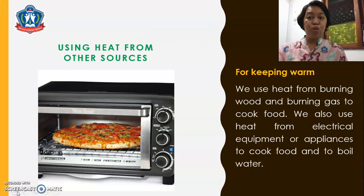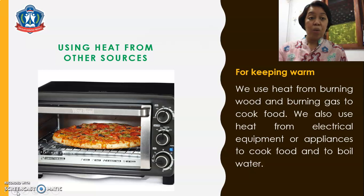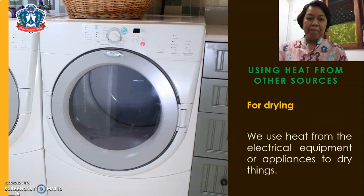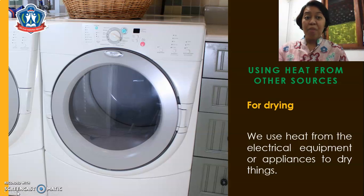So let's go now to using heat from other sources. For cooking, we use heat from burning wood and burning gas to cook food. We also use heat from electrical equipment or appliances to cook food and to boil water. For keeping warm, in very cold weather, we use heat to keep warm. For drying, we use heat from electrical equipment or appliances to dry things.